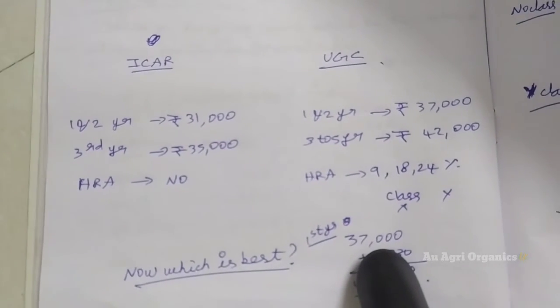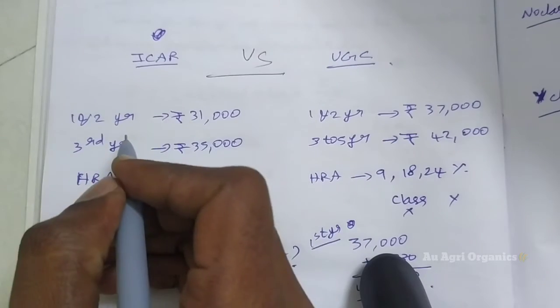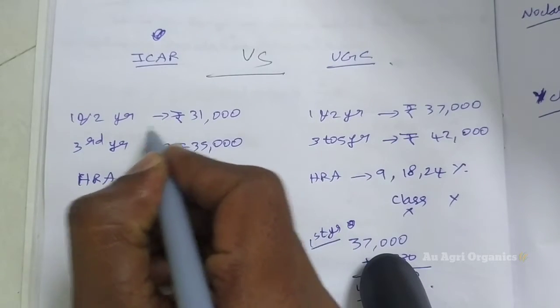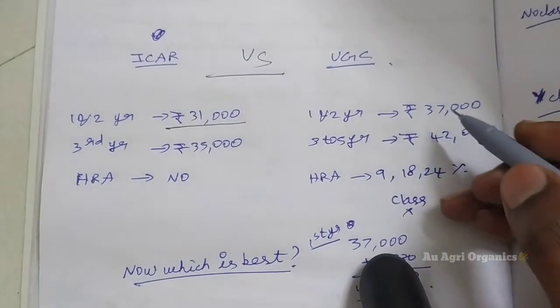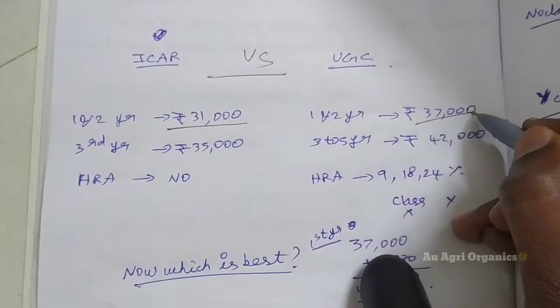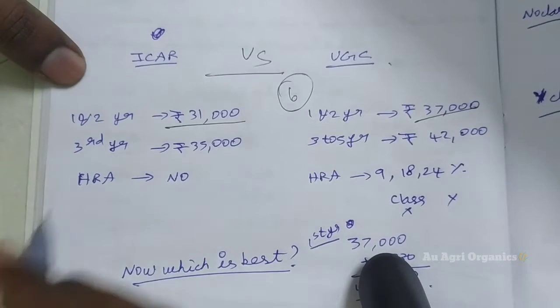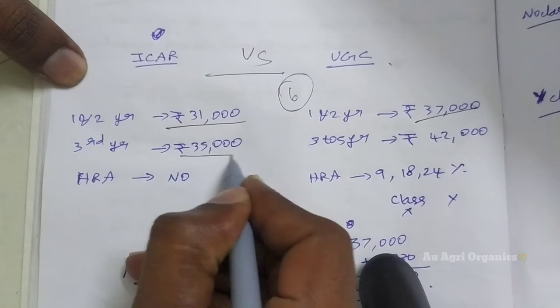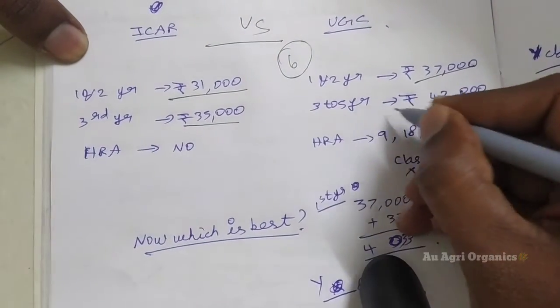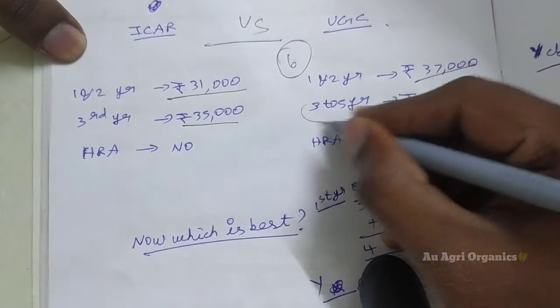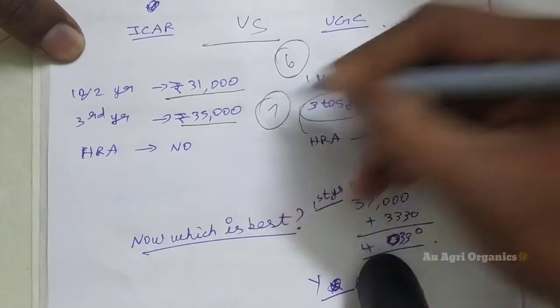So here is the difference between ICAR and UGC. Here for the first two years in ICAR, you will get the fellowship of Rs. 31,000 per month. But in UGC, you will get the fellowship of Rs. 37,000 per month. So here itself there is a difference of Rs. 6,000. Next is during the third year, you will get Rs. 35,000 per month. But in UGC fellowship, you will get 3 to 5 years. From third year to 5 years, you will get Rs. 42,000. Here is the difference of Rs. 7,000 per month.